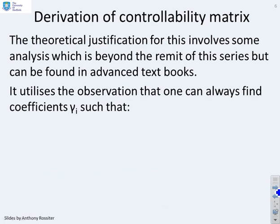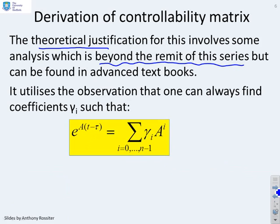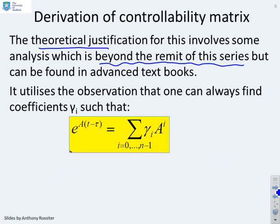What about the derivation of this controllability matrix? Now, the theoretical justification for this involves analysis which is beyond the remit of this video series. So we're only going to give a very brief insight here. And if you really want to know, you'll have to go and look at some more advanced textbooks. But what it comes down to is this. First of all, you need to be able to prove that this statement is always true. So if I take exponential of a matrix, e^(A(t-τ)), then I can always find some γ_i such that that's equal to this expression here.